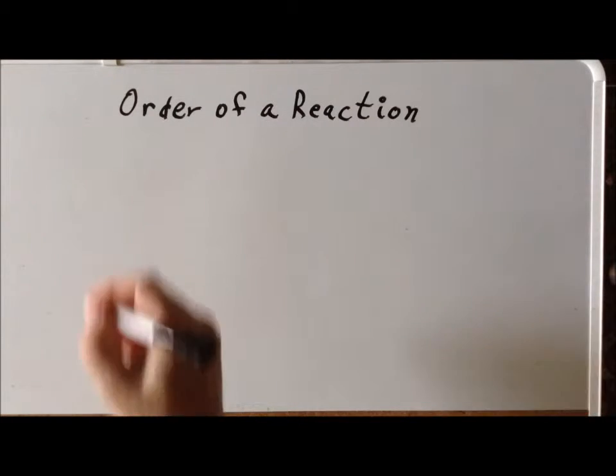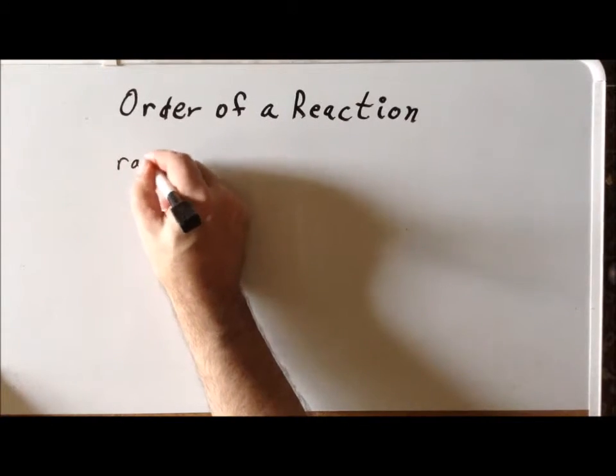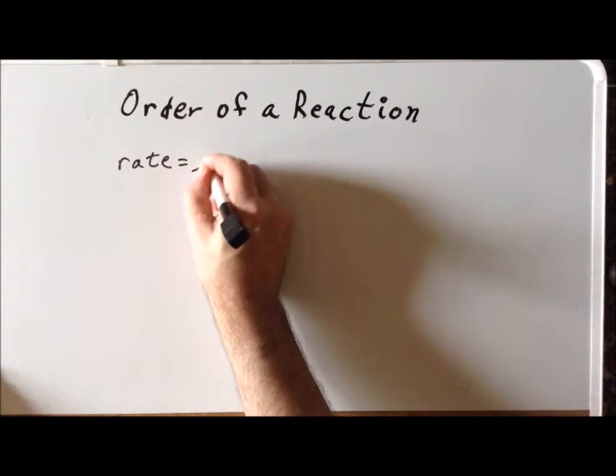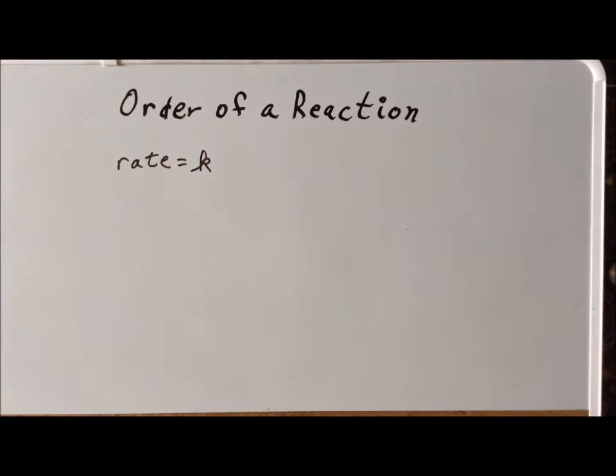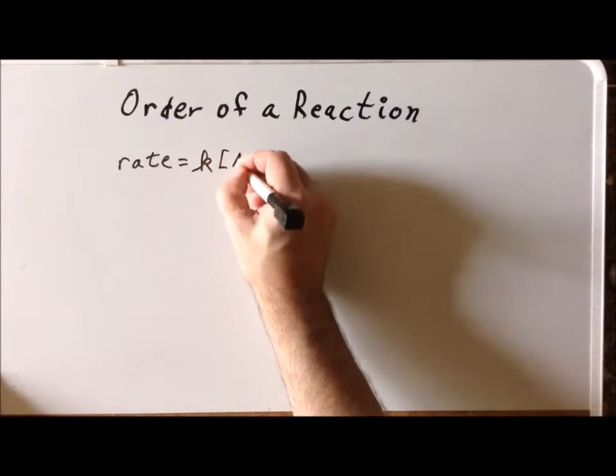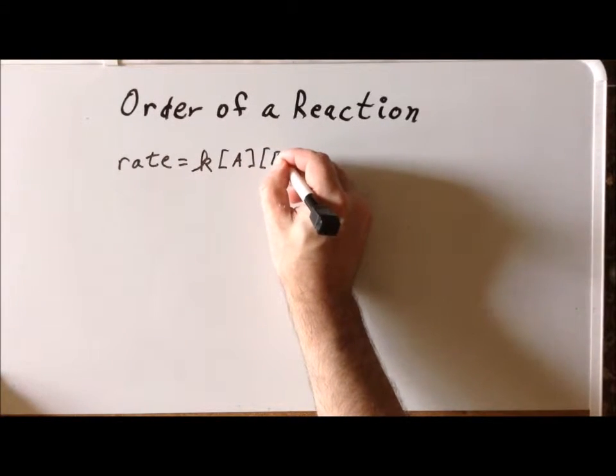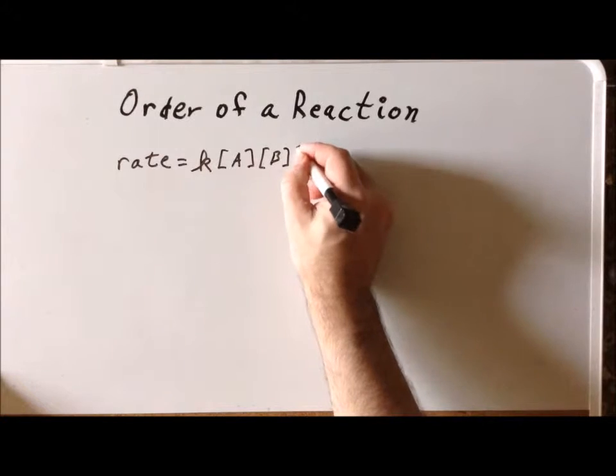Let's assume, for the sake of generality, that we can write the rate law in the following way. So we have the rate of the reaction, we always have a rate constant k, and let's assume that there are three reactants, called the first reactant A, the second reactant B, and the third reactant C.